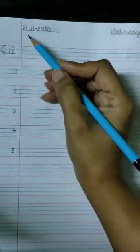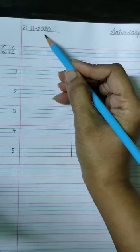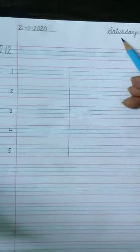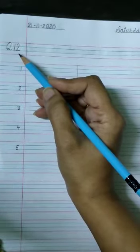First, write the date: 21-11-2020, 21st November, and today is Saturday. Write here, question 12.